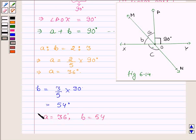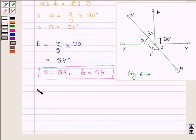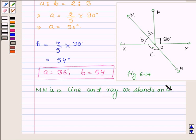Now since MN is a line and ray OX stands on it, this implies that angle MOX plus angle NOX will be equal to 180 degrees.